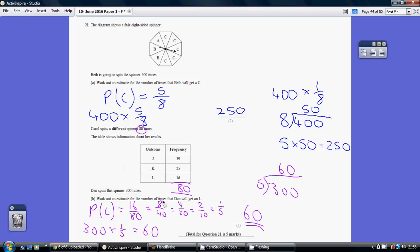Now, part B, work out an estimate for the number of times that Dan will get an L. Well, the L is 16 out of 80, which simplifies down to 1 out of 5. So 1 out of 5 chances of getting an L if you spin the spinner one time.